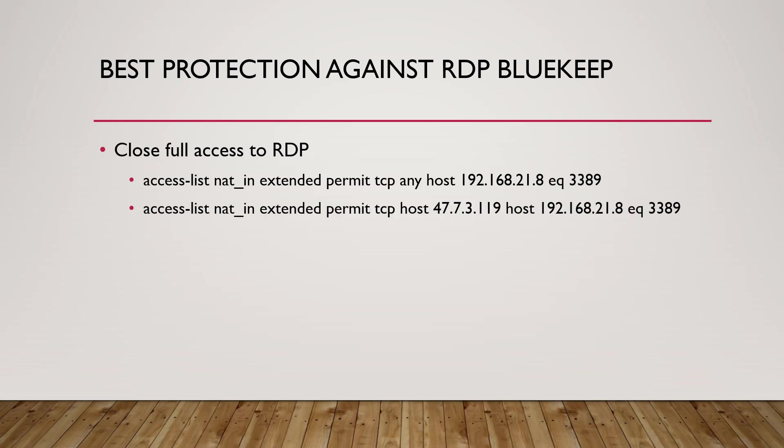I've edited the access list to say 'permit TCP any host' and locked it down to a single IP address, so only one public IP from the outside can get in to our internal server. You don't need to make any changes to static or NAT settings — this is the only setting you need to change in the access list. If you're not using a Cisco firewall, you likely have something similar where you can replace the 'any' source with a single IP or just the IPs that you know should have access.